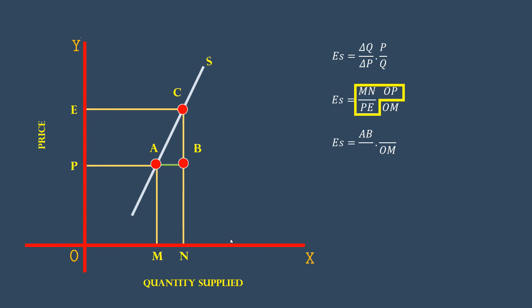Similarly, PE is equal to BC. OP is equal to MA. Hope you are clear up to this point. We shall proceed to the next step.